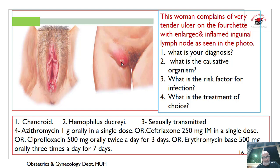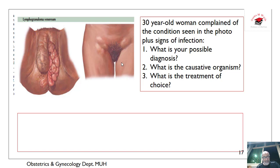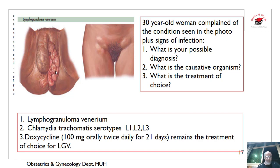This is chancroid of Haemophilus ducreyi. What about these? This is rare in our locality — this is lymphogranuloma venereum. This is lymphogranuloma venereum, which is destructive to the vulva and lymph nodes. The causative organisms are Chlamydia trachomatis serotypes L1, L2, L3. The treatment of choice is doxycycline 100 mg orally twice daily for 21 days.